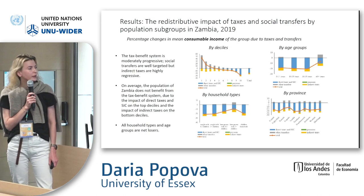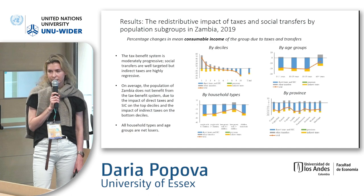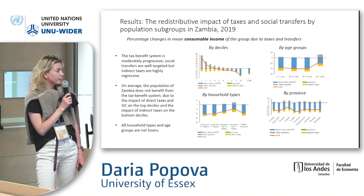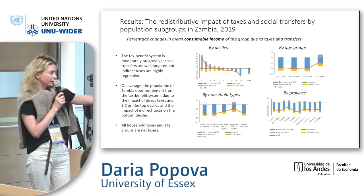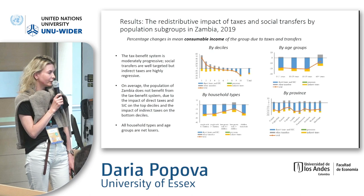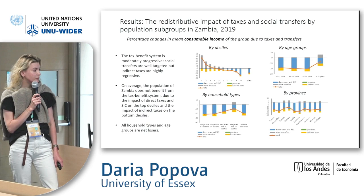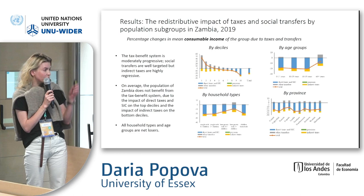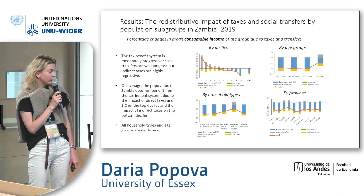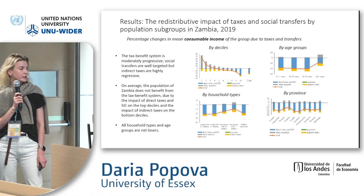Moving on to Zambia: the tax system is progressive but less so than in Mozambique. Social transfers are well targeted, but indirect taxes appear to be highly regressive — the share of indirect taxes is high in the bottom deciles. Again, on average the population does not benefit from the tax benefit system, due to the impact of direct taxes on the top deciles being quite high. In this country, all household types and age groups are net losers.